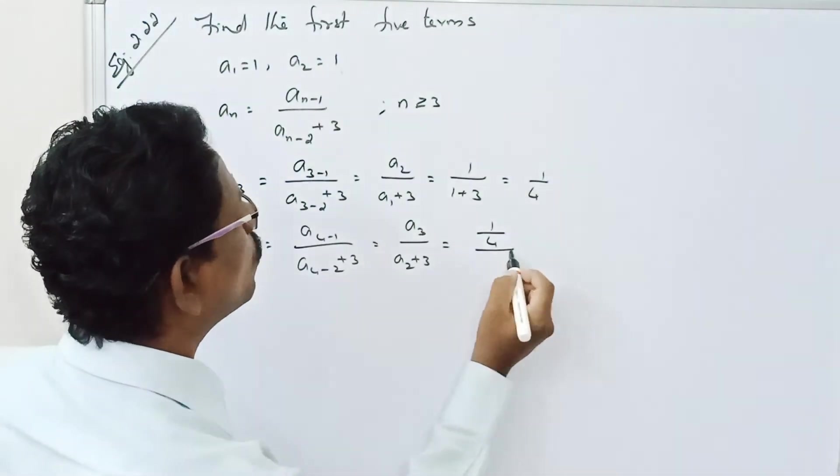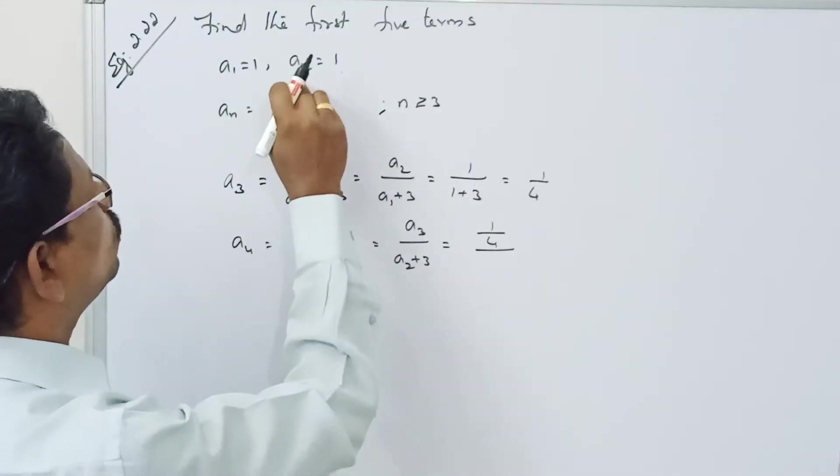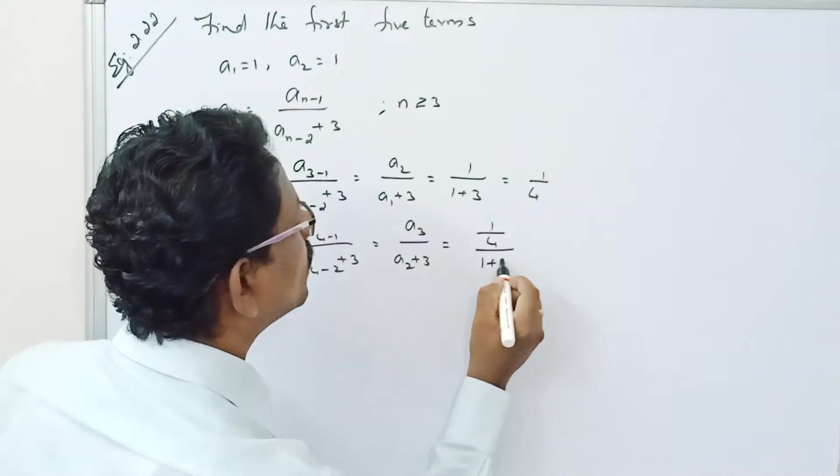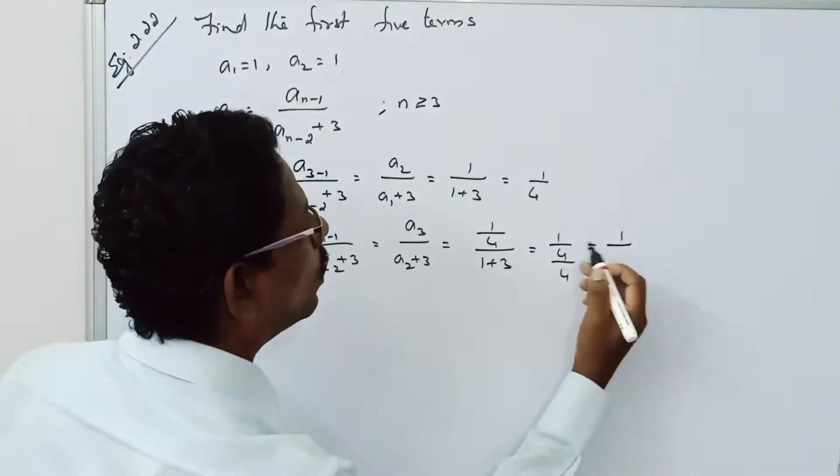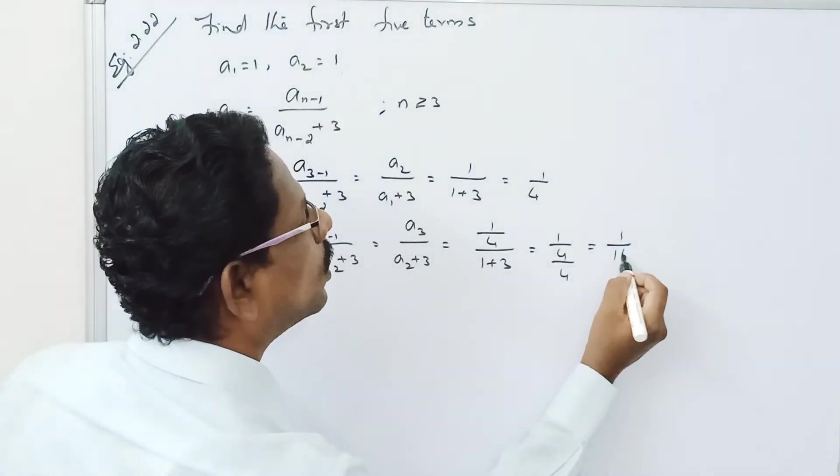So 1 by 4 by A2. A2 is equal to 1. 1 plus 3 equal to 1 by 4 by 4. A4, A4 equal to 1 by 16.